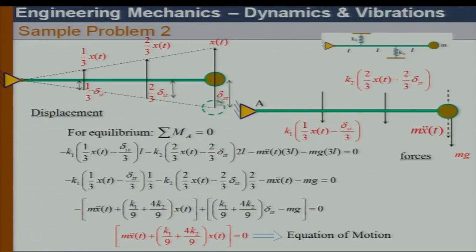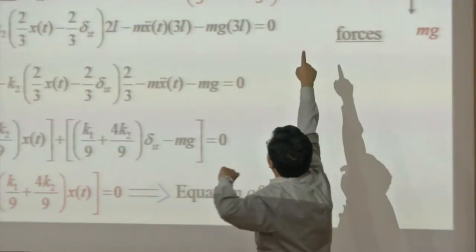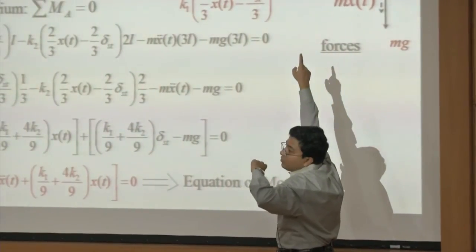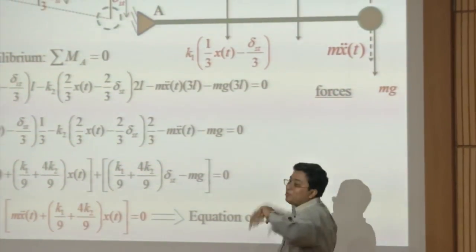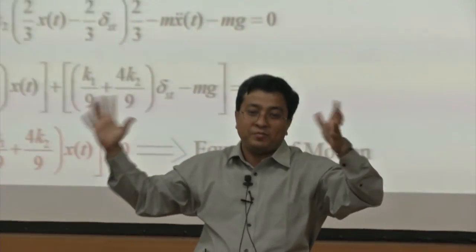From the displacement diagram I can create the force diagram. Looking at the net displacement of each spring: the top spring is under compression so its force acts downward; the bottom spring is under tension, which also acts downward on the body. So there are two downward spring forces plus mg plus the inertia force acting downward.